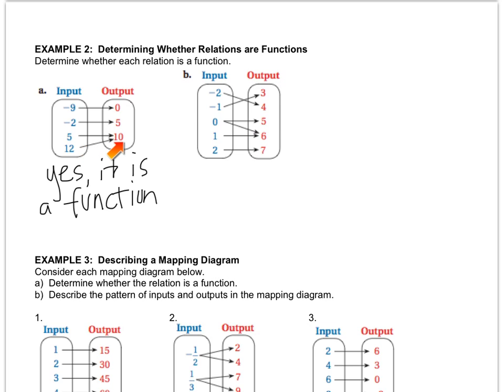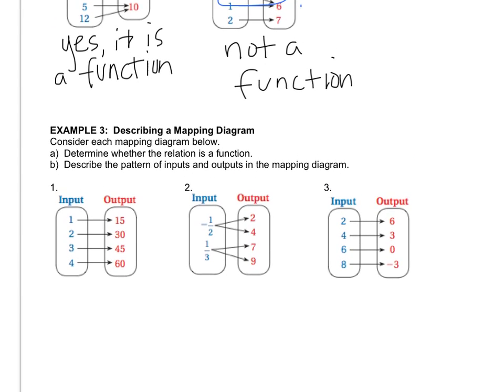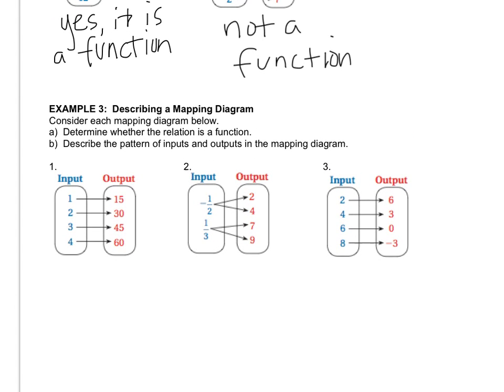A function is where you know exactly where to go, and something that's not a function is where you have this situation where you don't really know where you're supposed to land. So letter B is not a function because it has this question mark. In example three we have to do two things. First we have to determine whether it is a function, and then we have to figure out the pattern that exists between the inputs and the outputs. But first look at number one. Is number one a function?